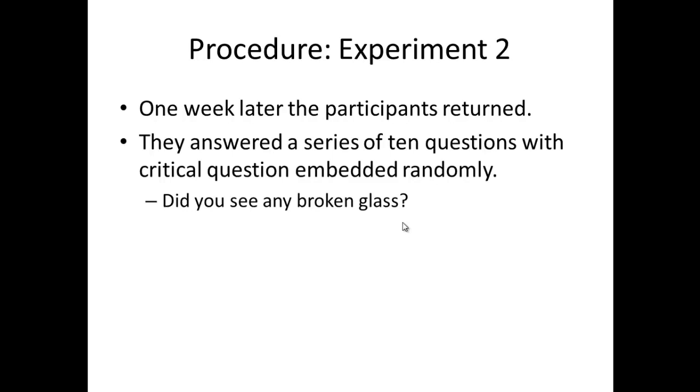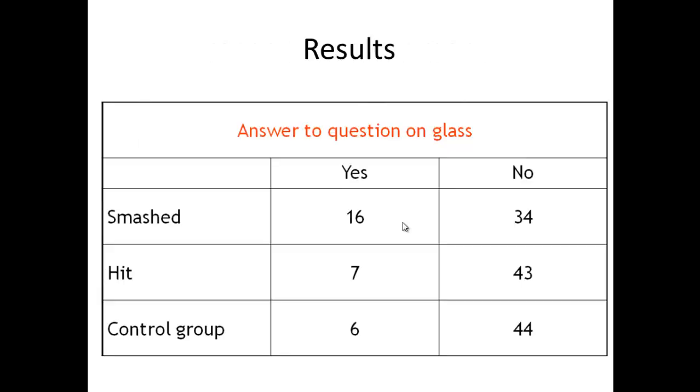One week later, the participants then returned. Here, they answered a series of 10 questions, and the order of the questions varied. They were randomly ordered to get rid of any order effects, depending on the participant. And there was one question they were actually interested in, and that was: did you see any broken glass? Just a note, there was no broken glass in the original film, so the correct answer to that question would be no. But what Loftus and Palmer were interested in was: Did the verb that was used about the speed estimate alter how likely they were to think they had seen broken glass? The majority of people still said no, but when the verb smashed was used, 16 participants reported having seen broken glass, compared to 7 in the hit group and 6 in the control group. So you can see there is not much difference between the control group and the hit group, but more than double the number said that they had seen broken glass when the verb smashed was used.